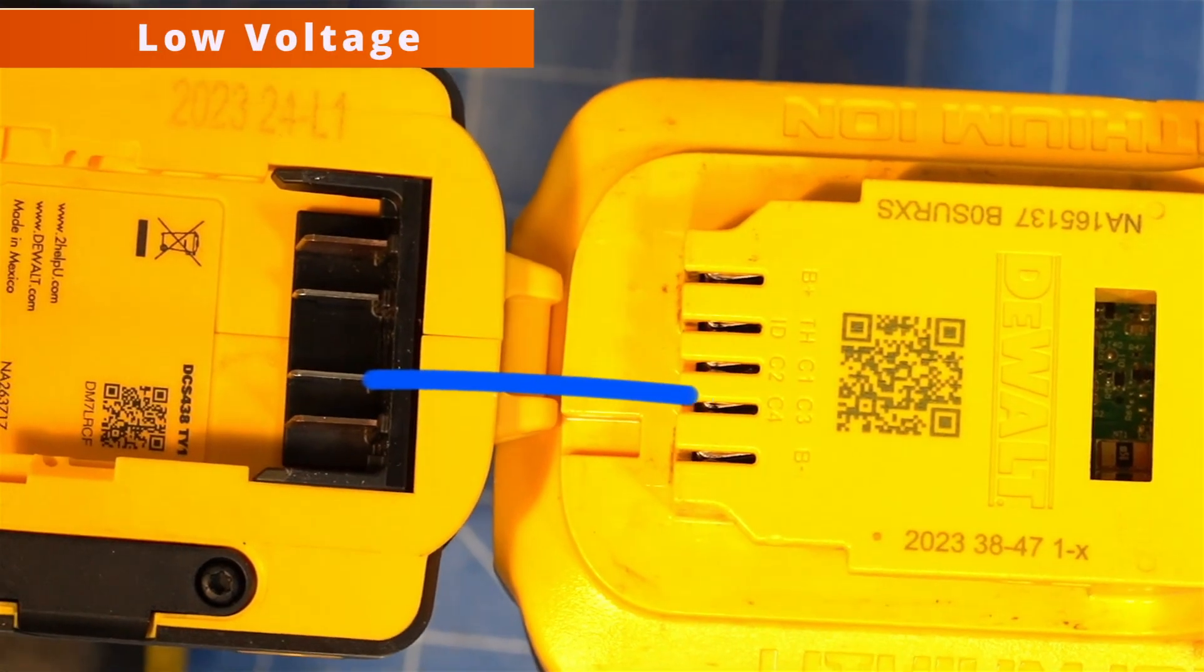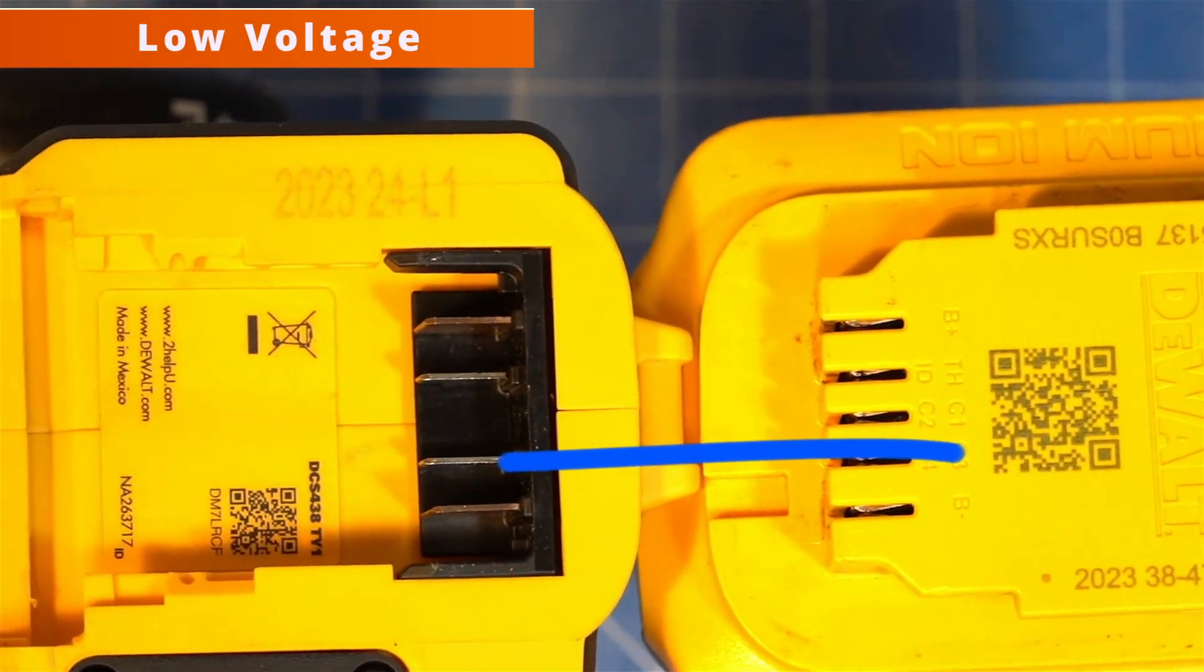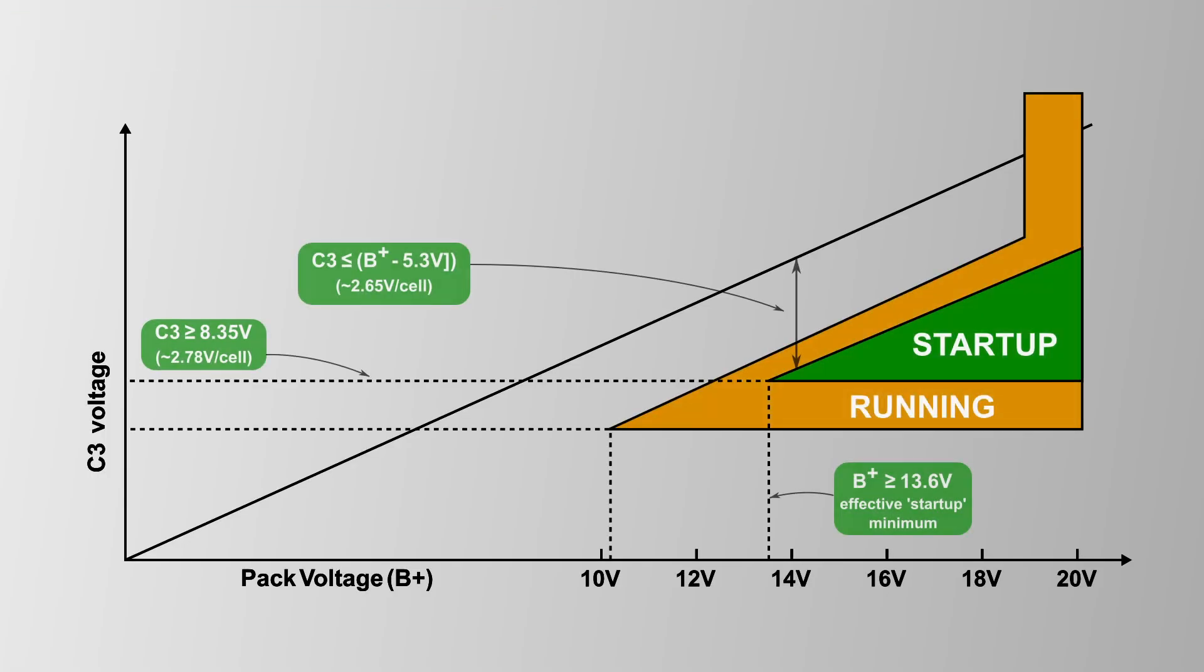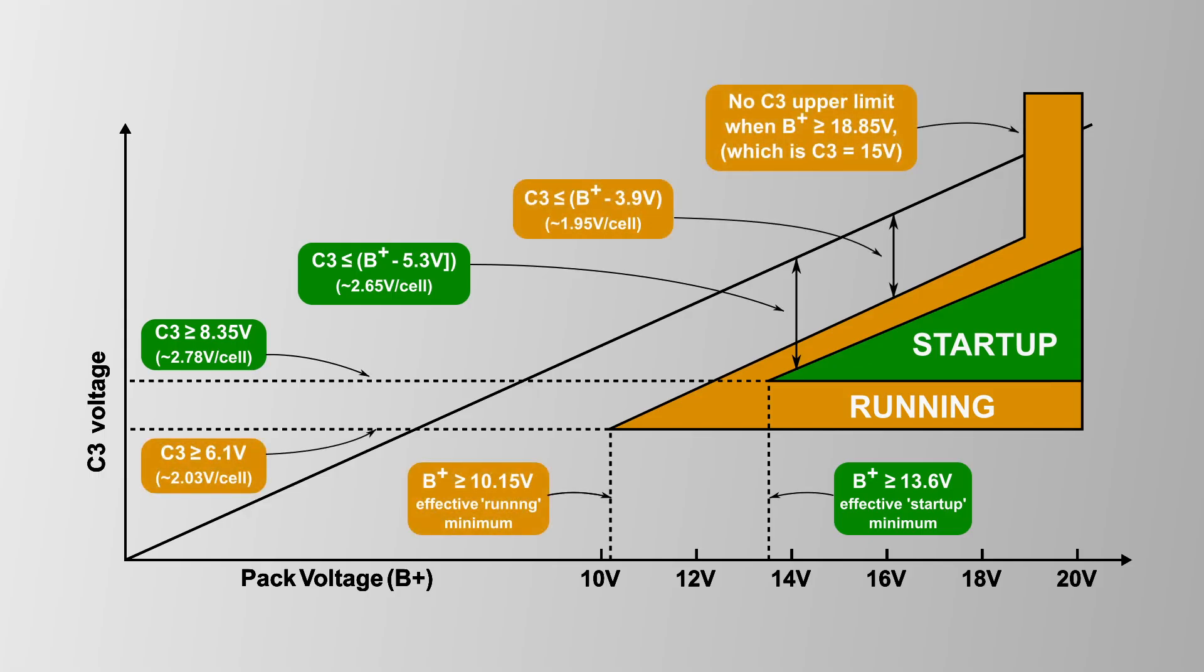The C3 pin is used as a basic low voltage detection. It has a narrow range for startup but a wider range once the tool is running. Startup is around 2.78 volts per cell for the first three cells and 2.65 volts per cell for the fourth and fifth cells, but only if they're perfectly balanced. Once running the cutoff criteria is effectively 2 volts per cell for both the upper and lower limits. I'm surprised that they'd go this low when they don't have individual cell monitoring.